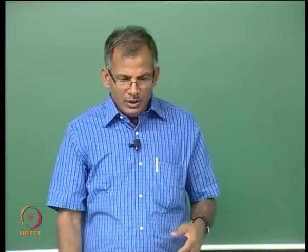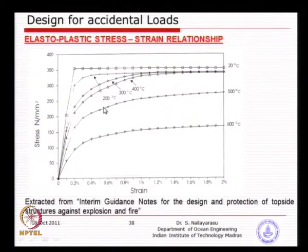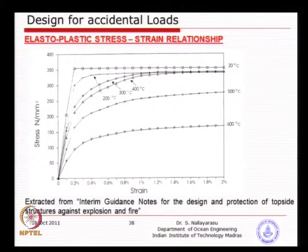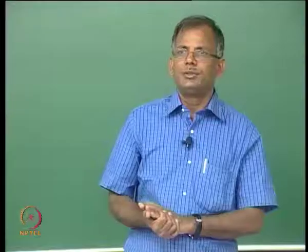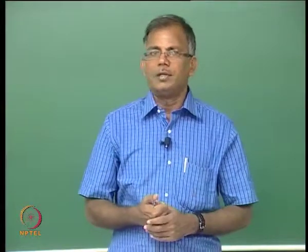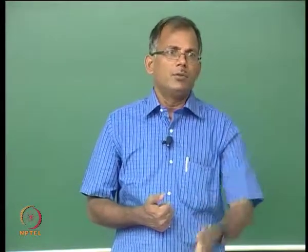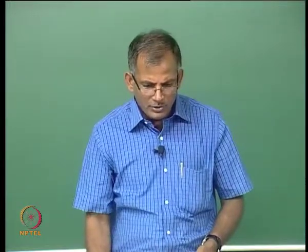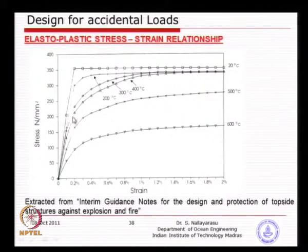The interim guidance notes give all the design procedure, and API has fully absorbed this report. The previous graph covers 20 degrees to 600 degrees; above that from 600 to 900 degrees, at 900 degrees the steel has almost no strength — only about 10 MPa and the curve goes almost flat, meaning the material has essentially melted. That is why walls should be designed for less than 500 degrees, ensuring residual strength remains.